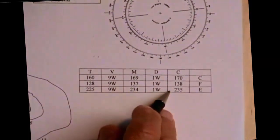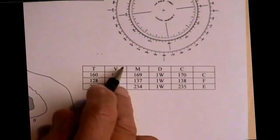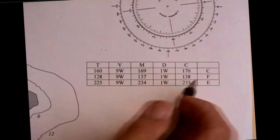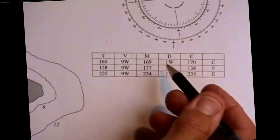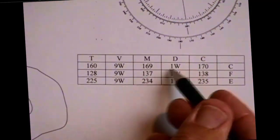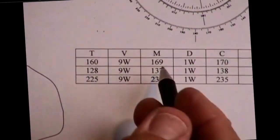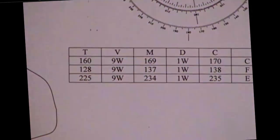Since we're going right to left in the table, it's a subtraction for westerly. We have 170 minus one west is 169, 137 here and 234 here.